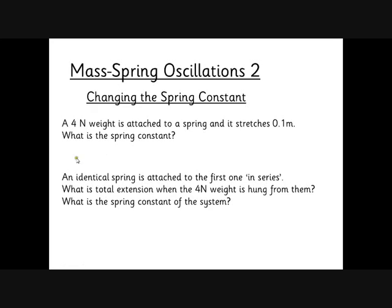Just a quick reminder first. A 4 Newton weight is attached to a spring and it stretches 0.1 meters. We're now able to calculate the spring constant. So we do F equals k delta l. We've got the force is 4, the extension is 0.1, so we've got 4 is k times 0.1. That gives us a spring constant of 40 Newtons per meter. If 4 Newtons stretches it 0.1 meters, it'll take 40 Newtons to stretch it a whole meter.